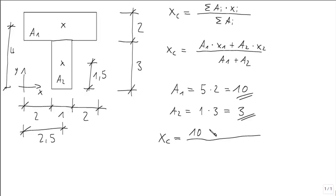A1 is 10 times the x distance, plus area 2 times the x distance, divided with 10 plus 3. It delivers 2.5.